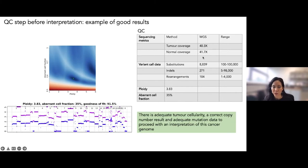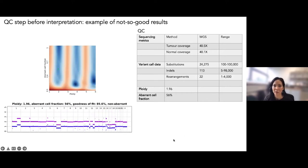Here's another one — tumor and normal coverage just about right, substitutions, indels and rearrangements reasonable, ploidy high, aberrant cell fraction a little bit lower. Nice clear plot — adequate tumor cellularity, correct copy number, adequate mutation data to proceed. Sometimes you get a result where the plot shows an alternative option that looks potentially better. In my team, we give the option of trying to re-seed — re-defining the copy number by forcing the algorithm into a different result. The real problem in this case is the tumor cellularity is only 25%, giving low tumor cellularity with an imperfect copy number result, but 24,000 mutations, 113 indels and 21 rearrangements — enough to still salvage information.